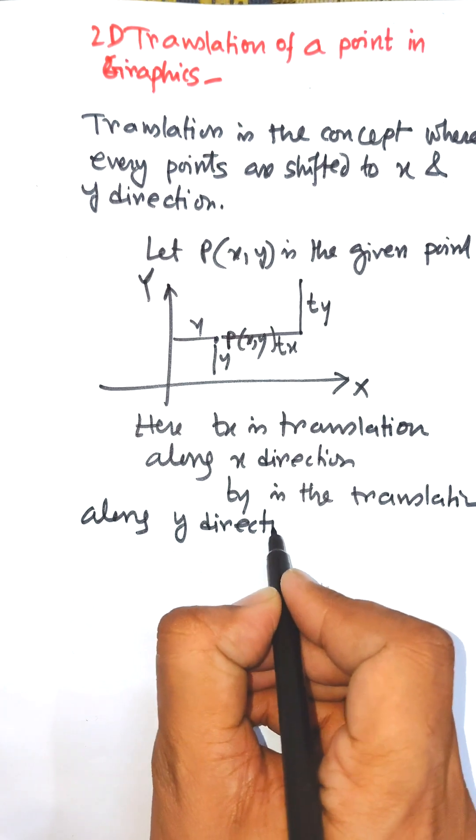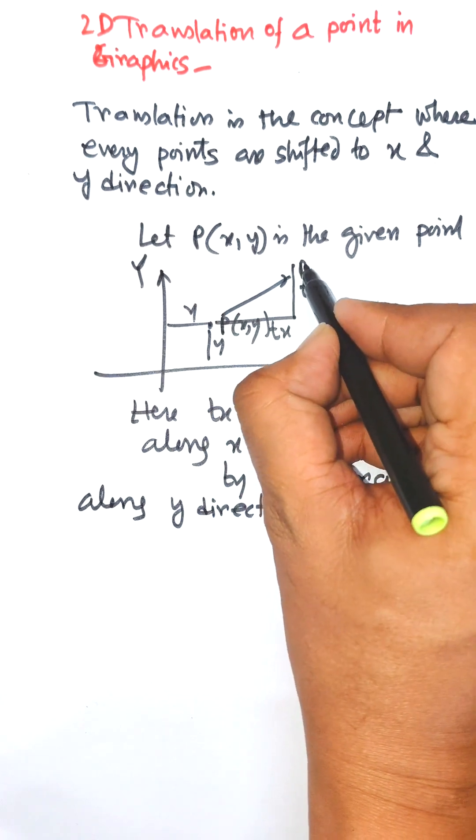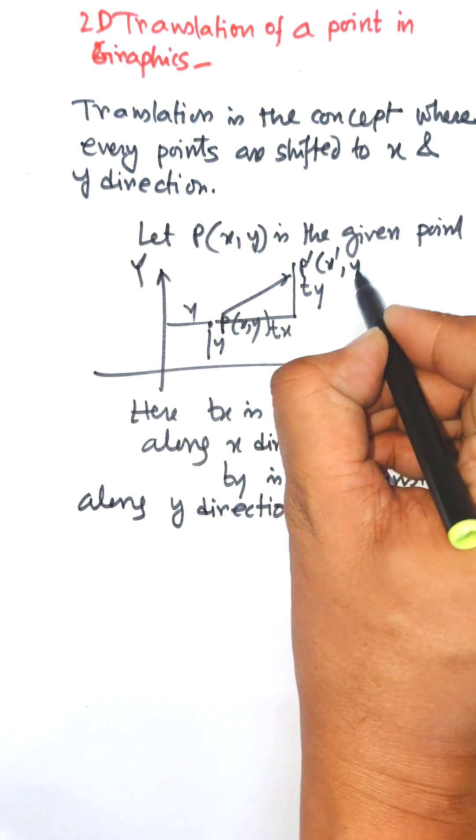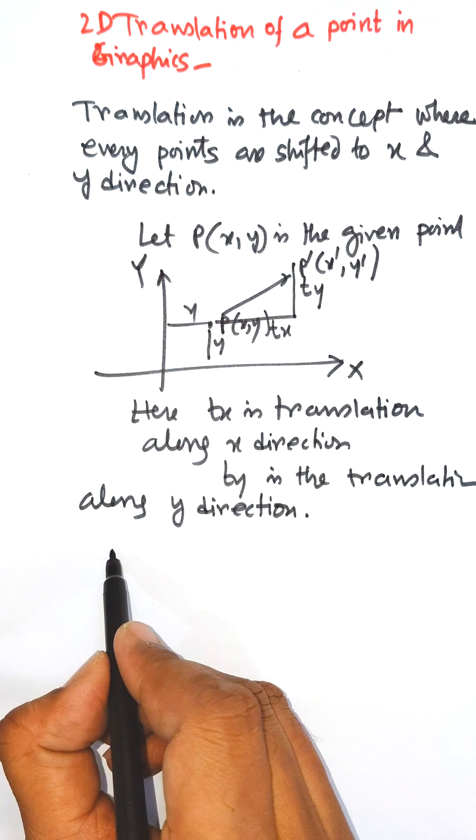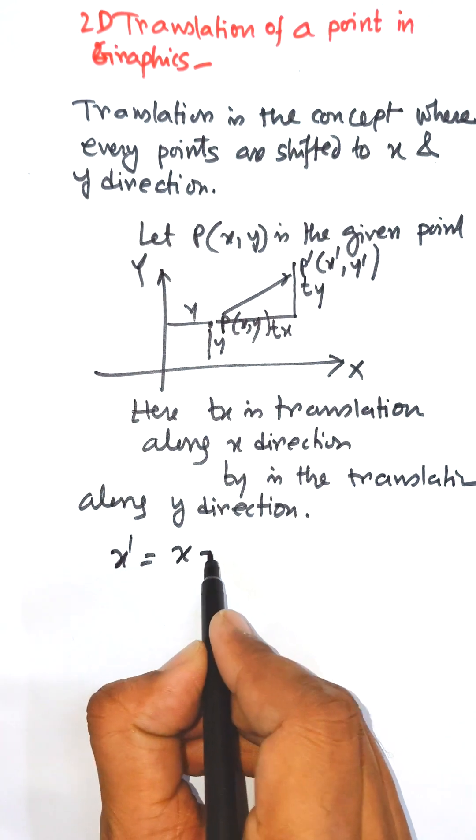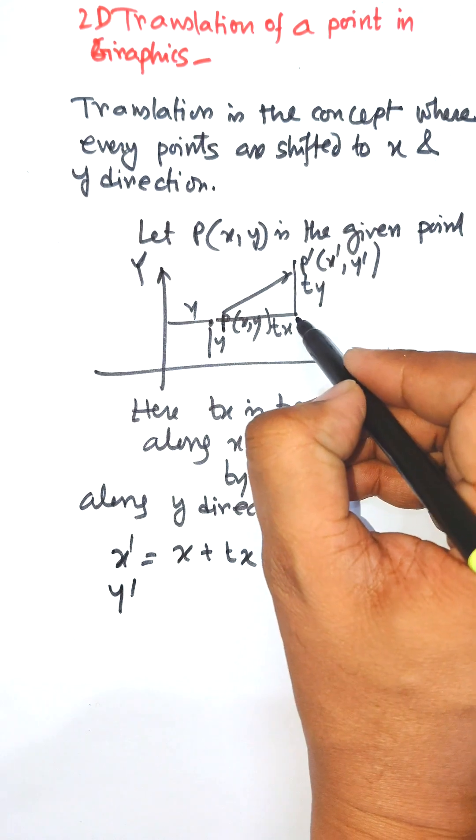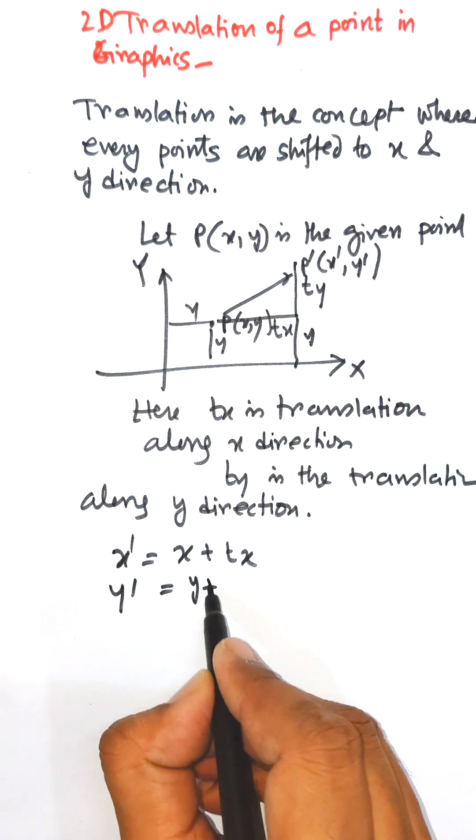So now the new point is P' (P dash), that is x', y'. Now x' equals x plus tx, and y' equals y plus ty.